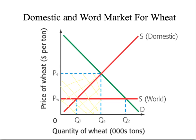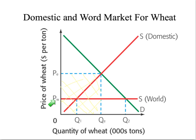Now let's imagine that the United States is interested in opening up its market to world producers. As a result of that, there's going to be a dramatic drop in the price of wheat down to PW.